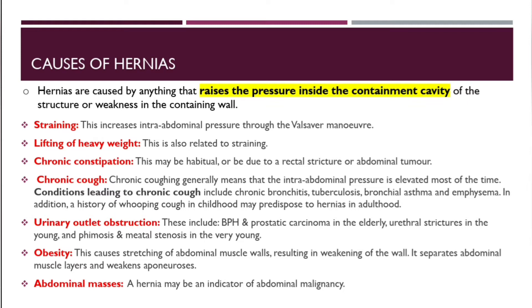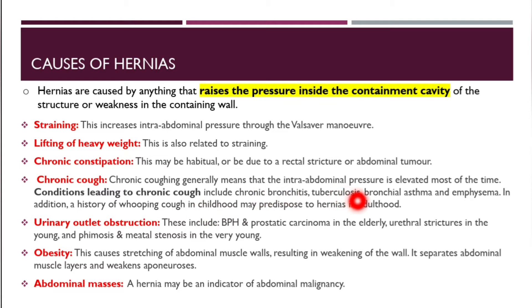Chronic cough increases the intra-abdominal pressure, so you need to think of conditions that cause chronic cough. Those conditions include chronic bronchitis, tuberculosis, asthma, and emphysema. In addition, a history of whooping cough in childhood may predispose to hernia in adulthood.